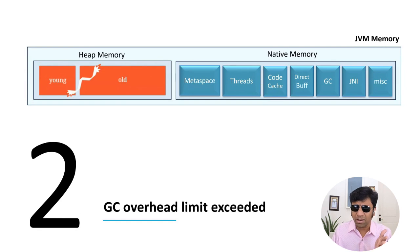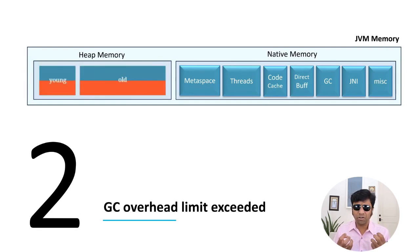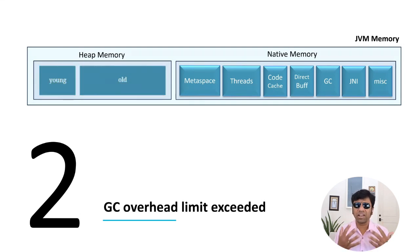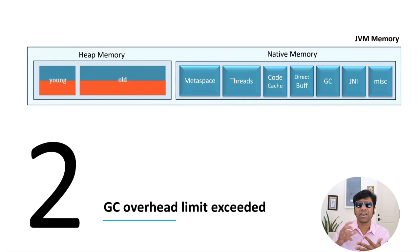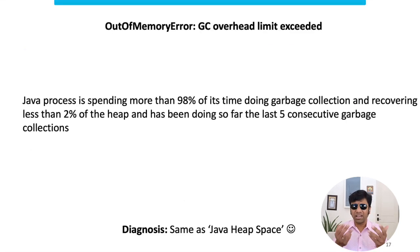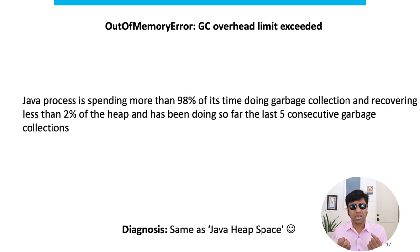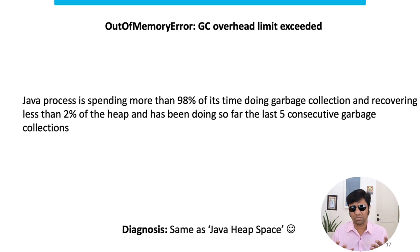So let's see why this gets thrown. This type of out of memory error gets thrown when the JVM spends a lot of time trying to do garbage collection but is not able to recover any memory. Technically, when Java is spending more than 98% of its time doing garbage collection and recovering only 2% of heap space, that's when this error gets thrown.